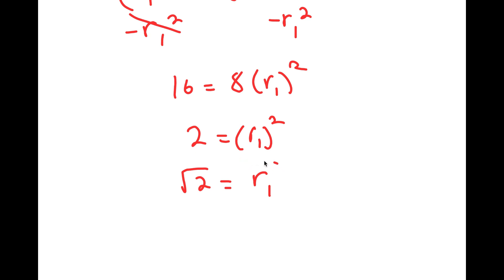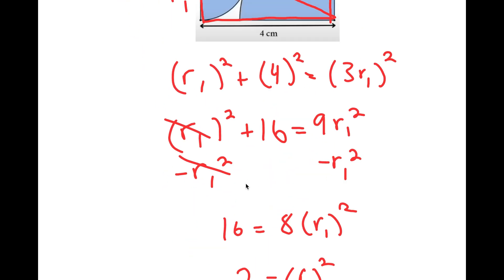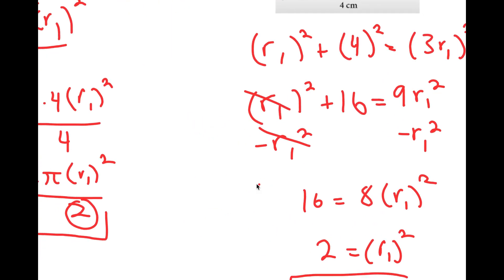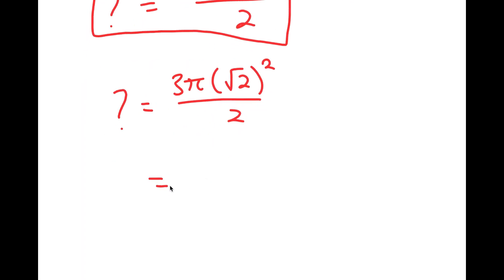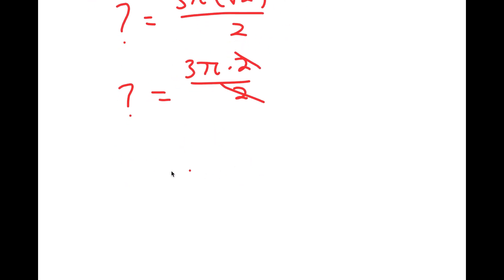Now that I know R sub 1 equals the square root of 2, I can plug this back in. The area of the blue region is 3 pi times the square root of 2 squared over 2, which turns into 3 pi times 2 over 2. These cancel out, and the area of the blue region is 3 pi.